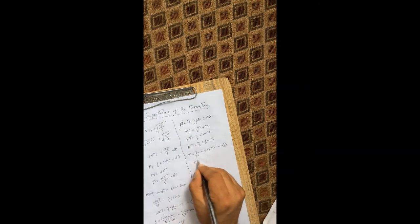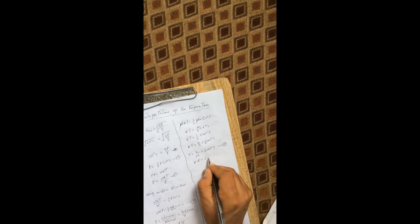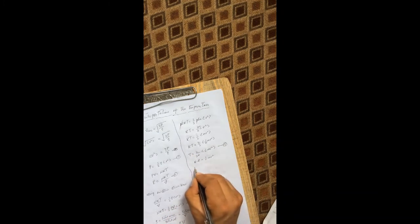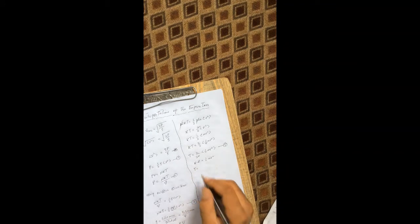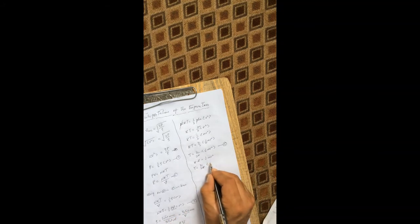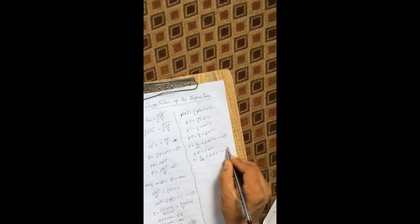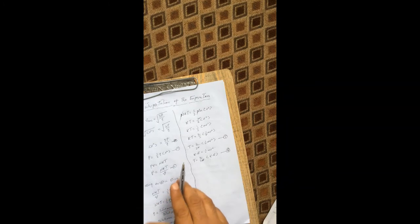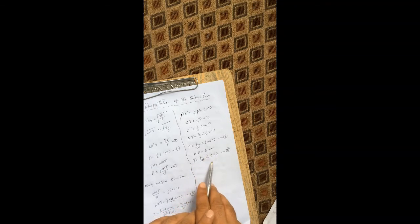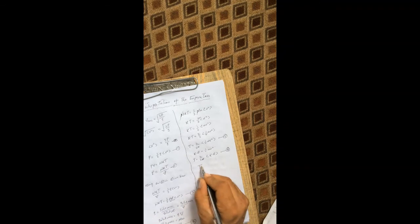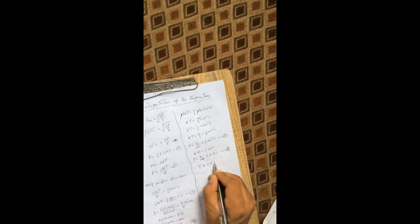We know that kinetic energy equals one-half mv², so equation five can be written as temperature T equal to two over 3k times the average kinetic energy, where k is the Boltzmann constant. This shows that the absolute temperature is directly proportional to the average kinetic energy.